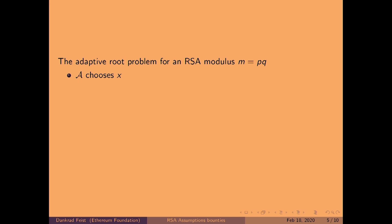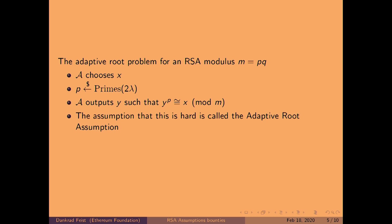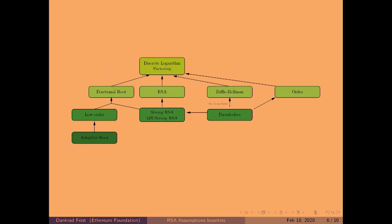The adversary chooses an x. A prime p is sampled from primes up to lambda. And they have to output a y such that y to the power of p equals x. So where does the adaptive root assumption fit into the already known RSA assumptions? It's a bit different from RSA, strong RSA, and so on.